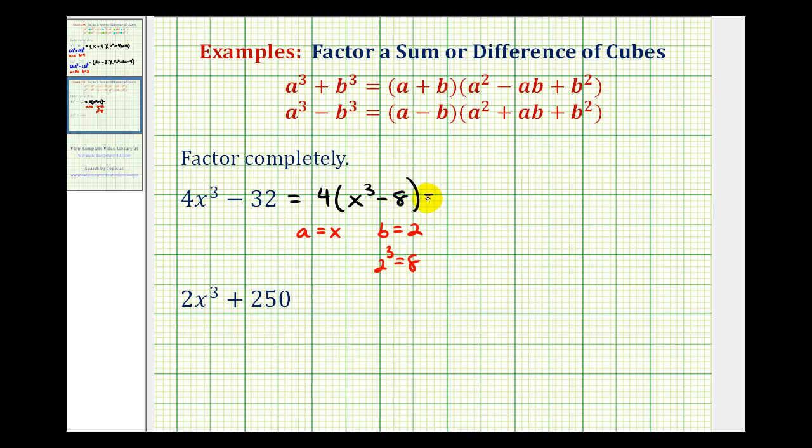So now we'll factor this again. We'll still have this extra factor of four. And then we'll have a binomial factor and a trinomial factor. Notice our binomial factor is going to be a minus b, so in this case we'd have x minus two.